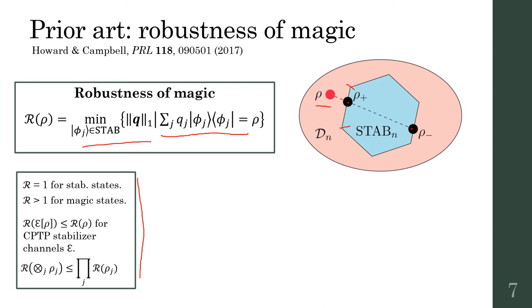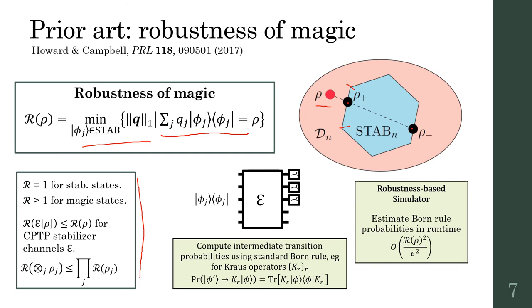This turns out to be a well-behaved magic monotone. This is a quasi-probability distribution over stabilizer states, so it leads to a classical simulator where we sample a stabilizer state and propagate through the circuit before producing a sample value for some observable. The runtime is given by the robustness squared.